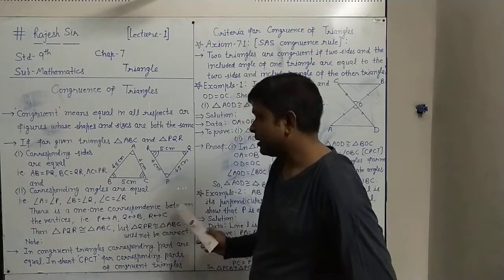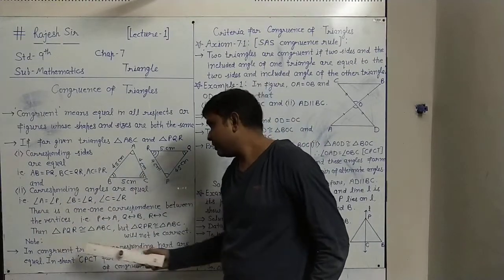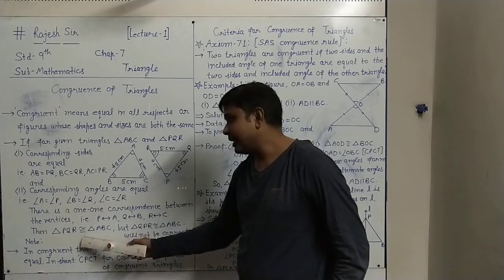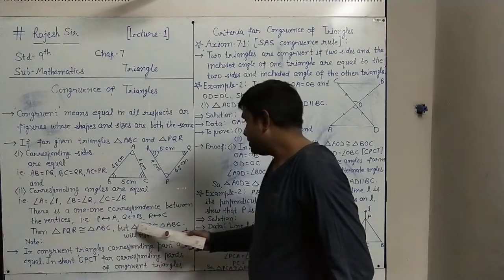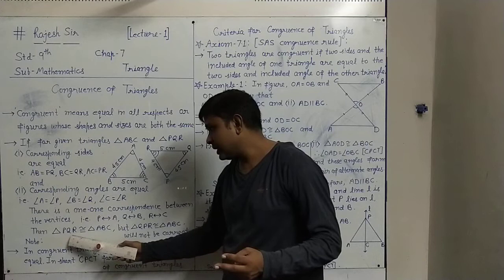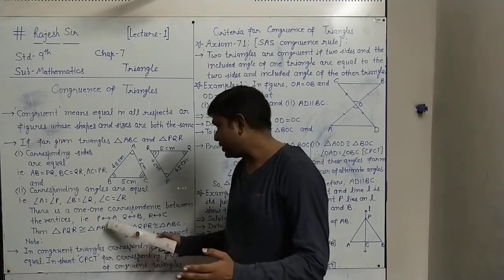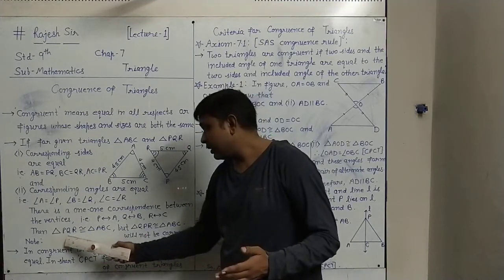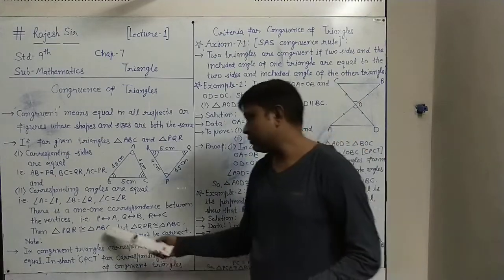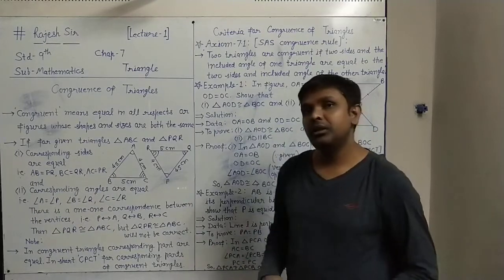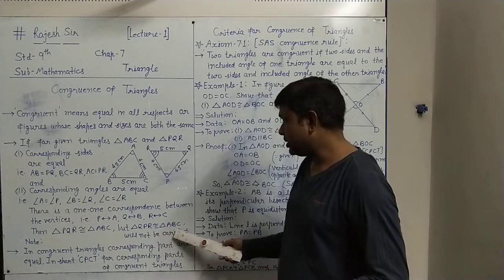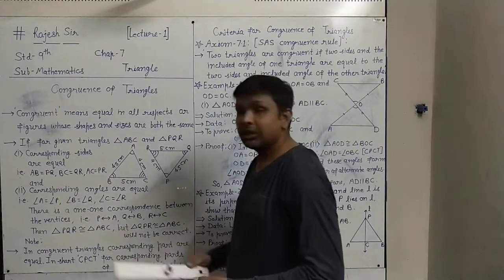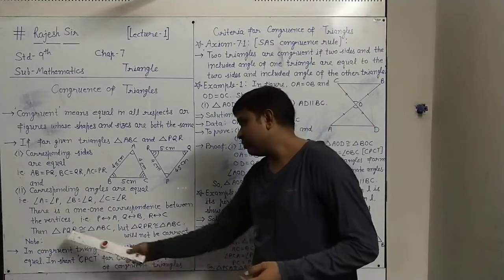Then we can say triangle PQR is congruent to triangle ABC. The congruence sign is used here. The order of vertices matters — the first, second, and third vertices of triangle PQR correspond to the first, second, and third vertices of triangle ABC in the same order. So we write: triangle PQR congruent to triangle ABC.